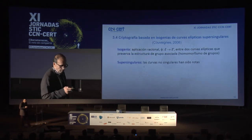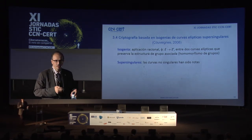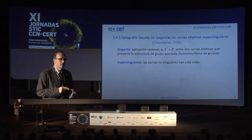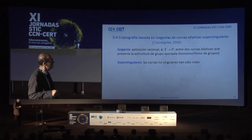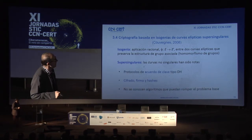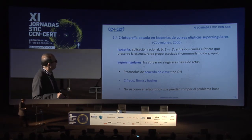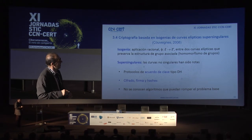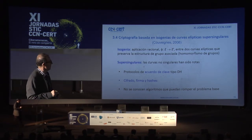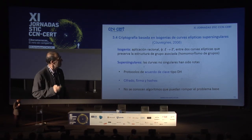La cuarta propuesta es la criptografía basada en isogéneas de curvas elípticas supersingulares. En lugar de trabajar directamente con las curvas, se trabaja con aplicaciones entre curvas que mantienen determinadas propiedades. Se utilizan curvas supersingulares porque las no singulares sí tienen algoritmos conocidos para su vulneración. Ya existen propuestas de acuerdo de clave tipo Diffie-Hellman con isogéneas, así como protocolos de firma, cifrado y cálculo de funciones hash. La ventaja es que no se conocen algoritmos que puedan romper ese problema. Esta propuesta es del año 2006.